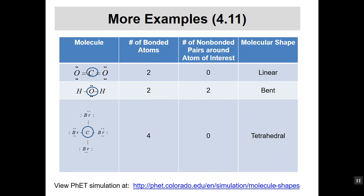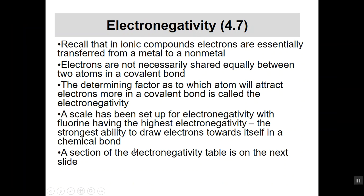Now let's build up to something related. In reality, electrons aren't totally transferred between atoms — and electrons in a covalent bond are not necessarily shared equally between two atoms. If I have hydrogen, carbon, and nitrogen, they may not pull electrons the same. The electrons may shift more to one side of the bond than the other. So we have a scale called the electronegativity scale, which tells us about the ability of atoms to pull electrons toward themselves in a chemical bond.